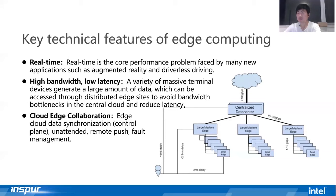The third feature is the cloud-edge cloud architecture. From a global perspective, the central cloud and multi-edge cloud form a distributed system. Each cloud handles data at its level, with remote push, fault management, and other operations all needing to be fully connected and integrated.